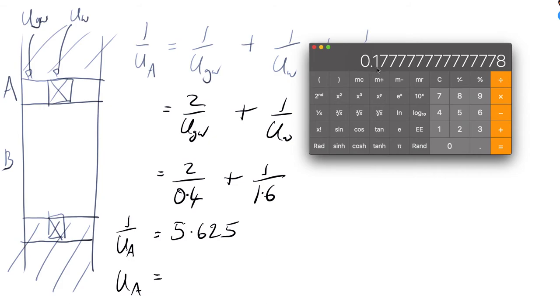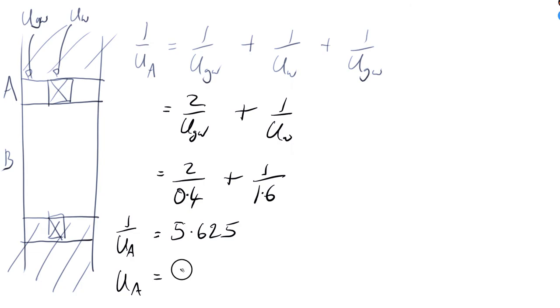We can use this useful 1 over X button here, and it's 0.177777. We just need to put 0.178 here should do. That's watts per meter squared Kelvin. So that's U_A.